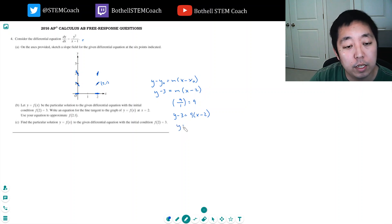So that's y equals 9x minus 18 plus 3, that's minus 15. So if I plug in 2, I get 3. Okay, good.